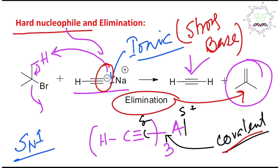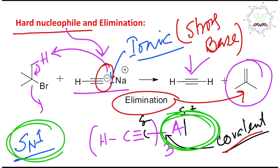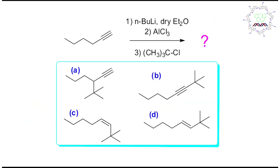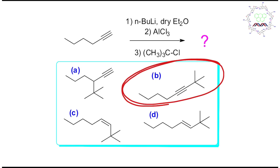So in this reaction the product is option B, which is the right answer. Now, if this question appears in your exam, how can you conclude the right answer in less than 30 seconds? You need to focus on the reagents step by step: first, n-butyl lithium; second, aluminium trichloride; third, the chloride.